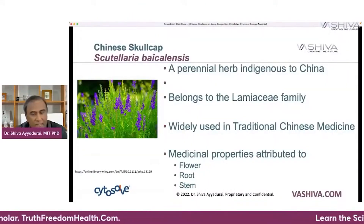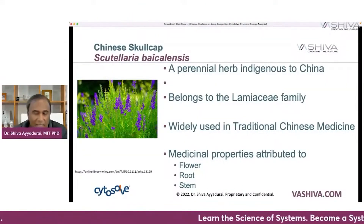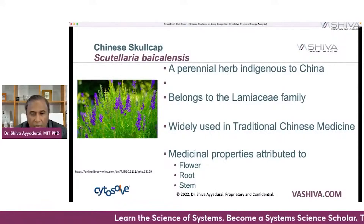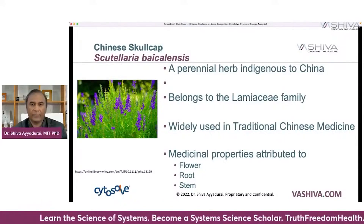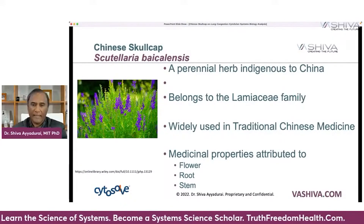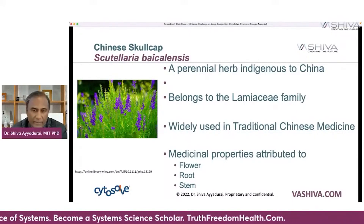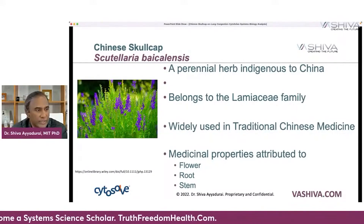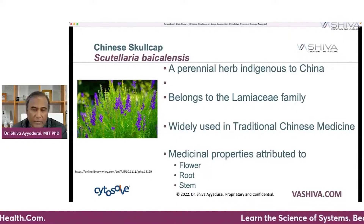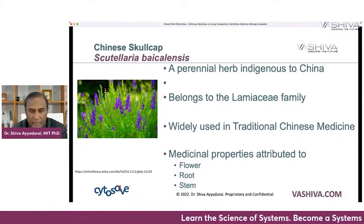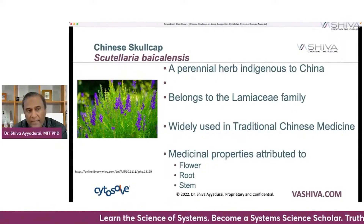Chinese Skullcap is called Scutellaria Baicalensis. It's a perennial herb, indigenous to China. It belongs to the Lamiaceae family and is widely used in traditional Chinese medicine. The properties attributed to its benefits come from the flower, the root, and the stem.